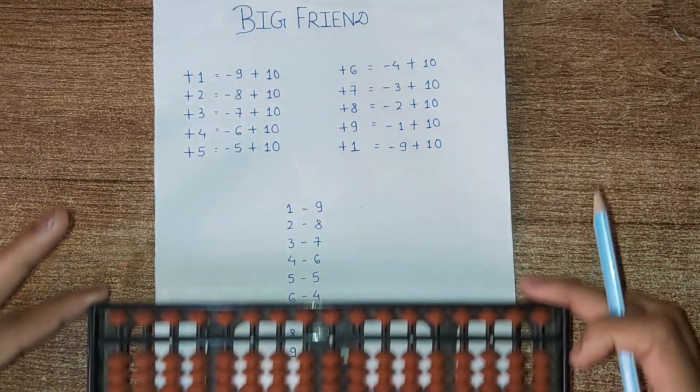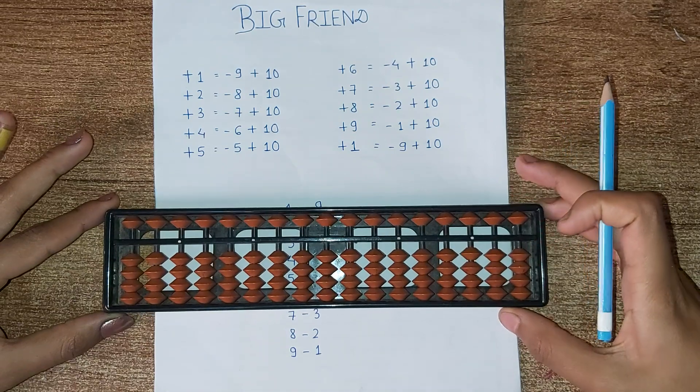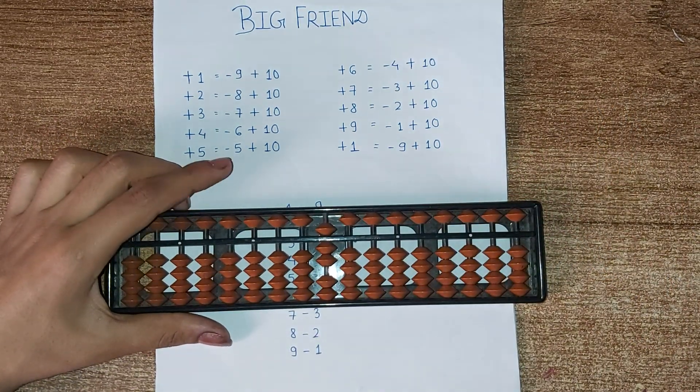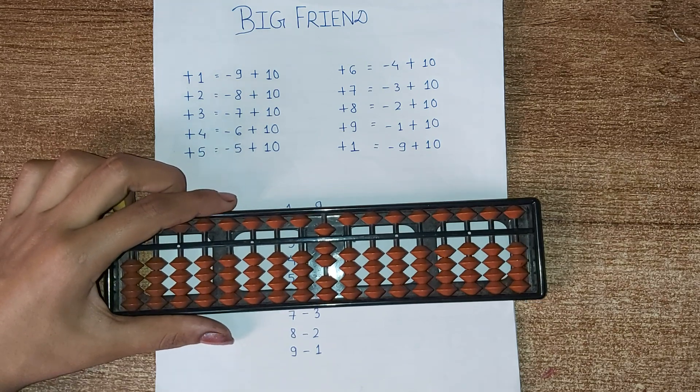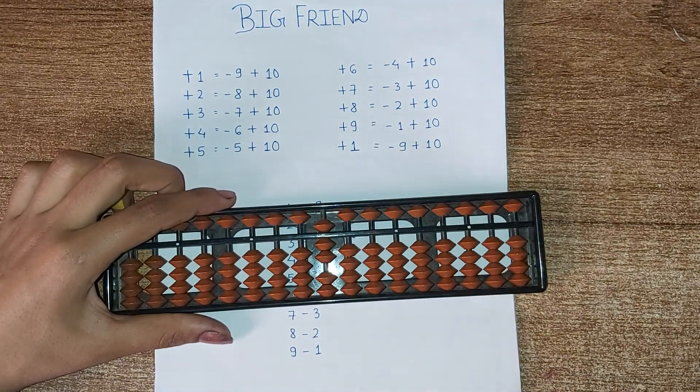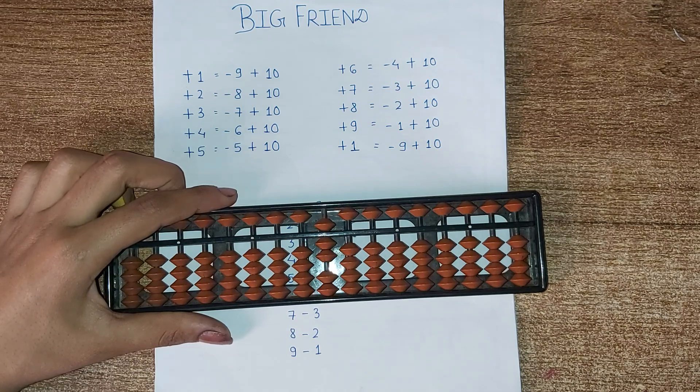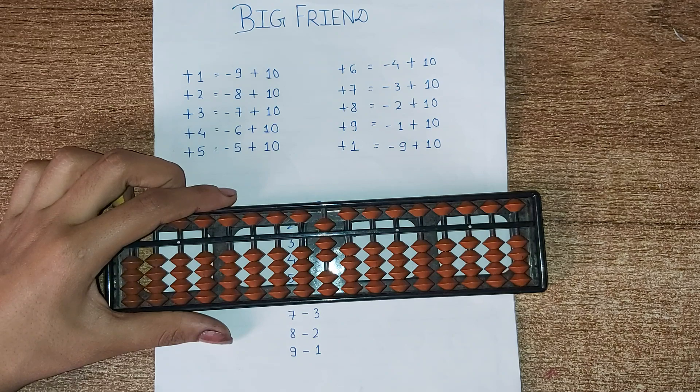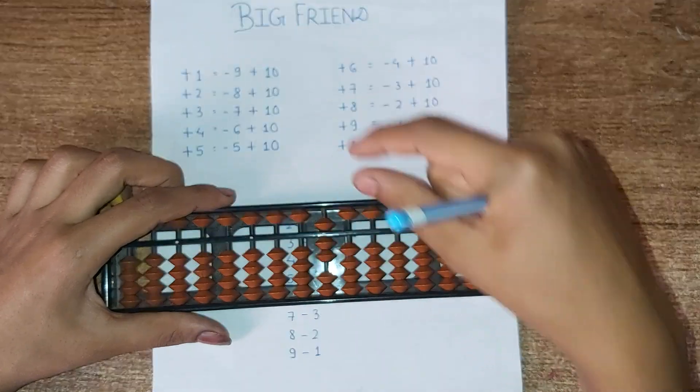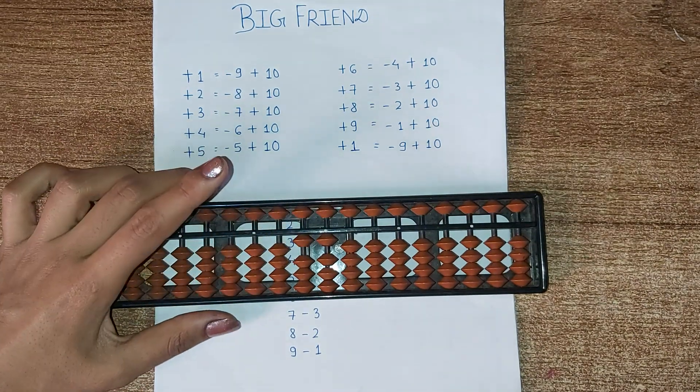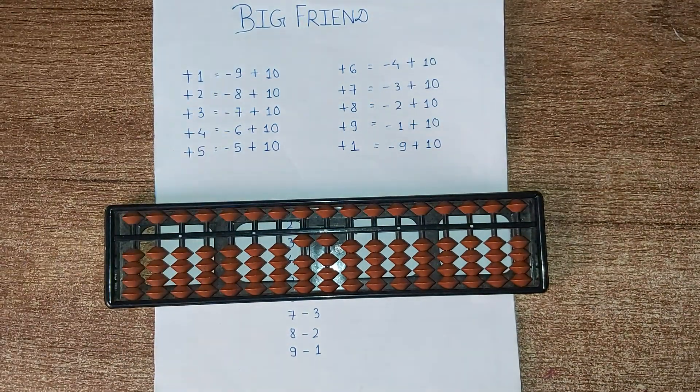Now let's take an example. Suppose we have 7 and now we have to add 4, but we don't have 4 beads available and neither we have beads available at the upper end to use the small friend formula. So in this case we use big friend formula. Your big friend for 4 is 6, that is minus 6 plus 10, so minus 6 in 1's place and plus 10 in 10's place. So we get the answer in this way.